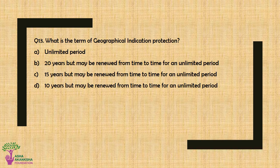Question No. 13: What is the term of geographical indication protection? Option A: Unlimited Period, Option B: 20 years but may be renewed for an unlimited period, Option C: 15 years but may be renewed for an unlimited period, or Option D: 10 years but may be renewed from time to time for an unlimited period.